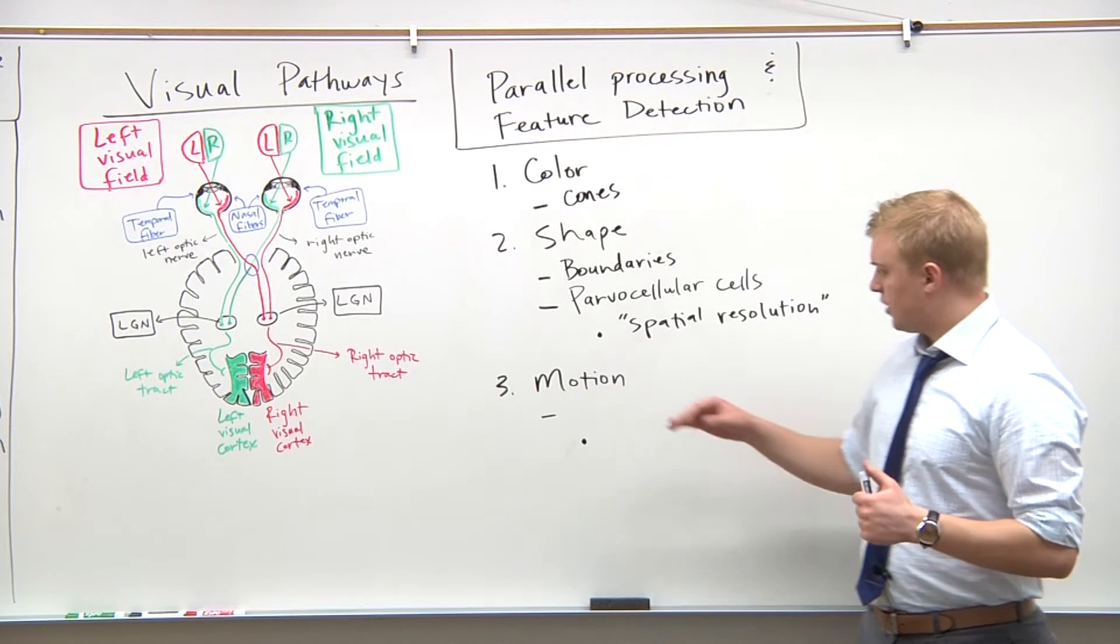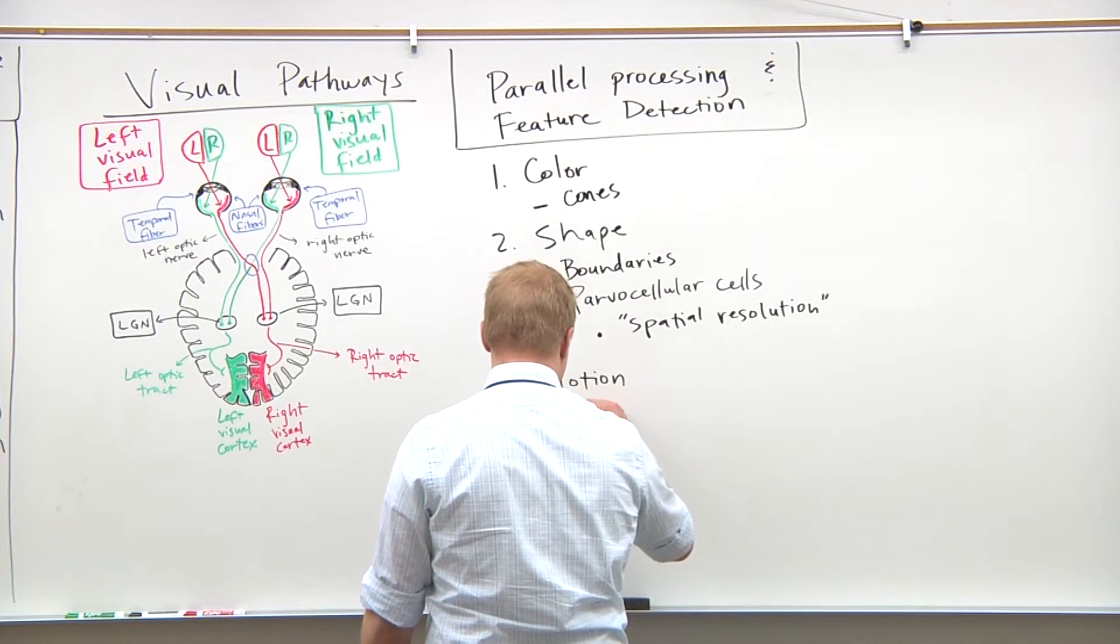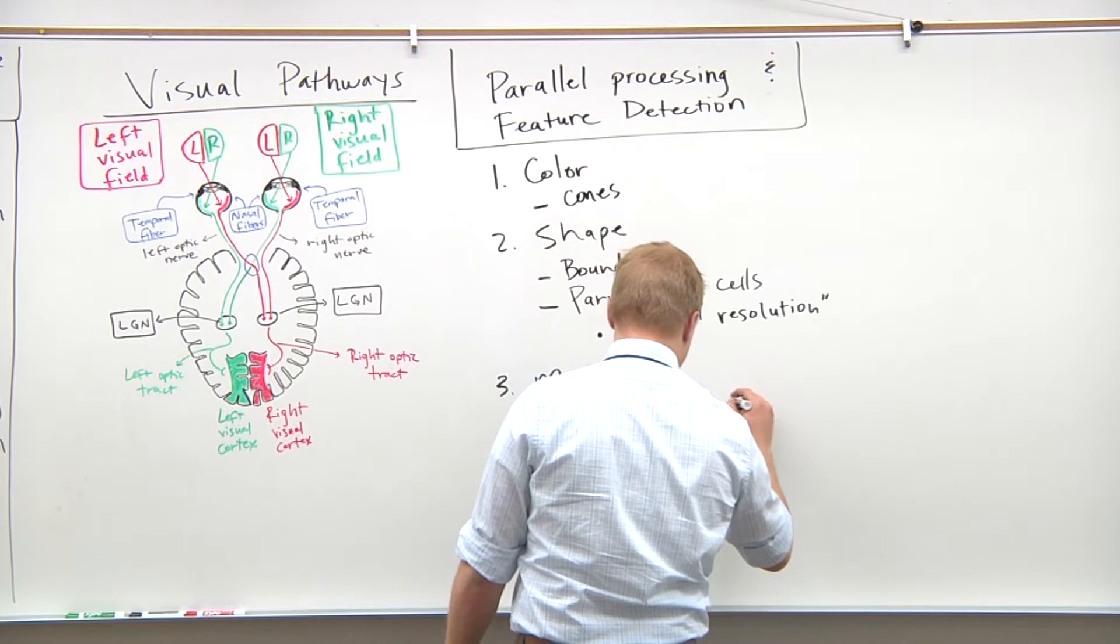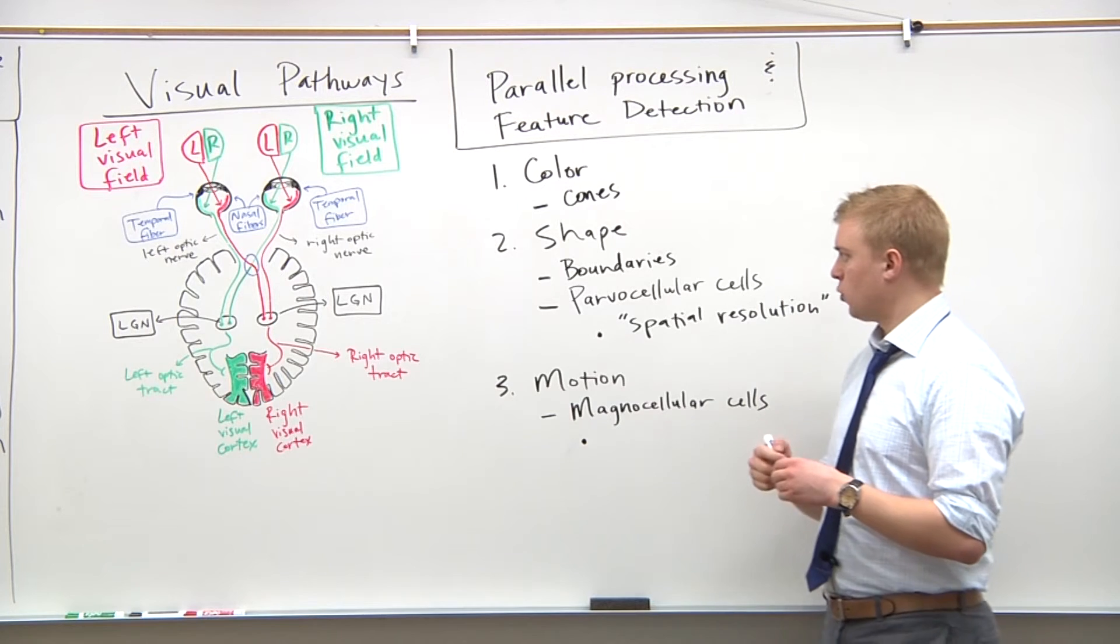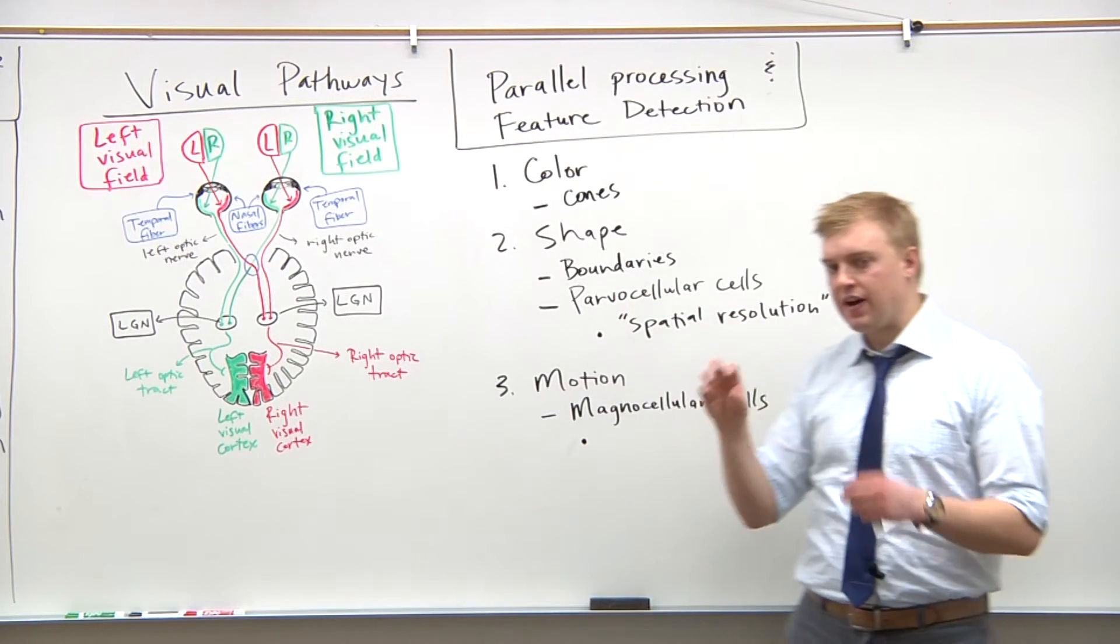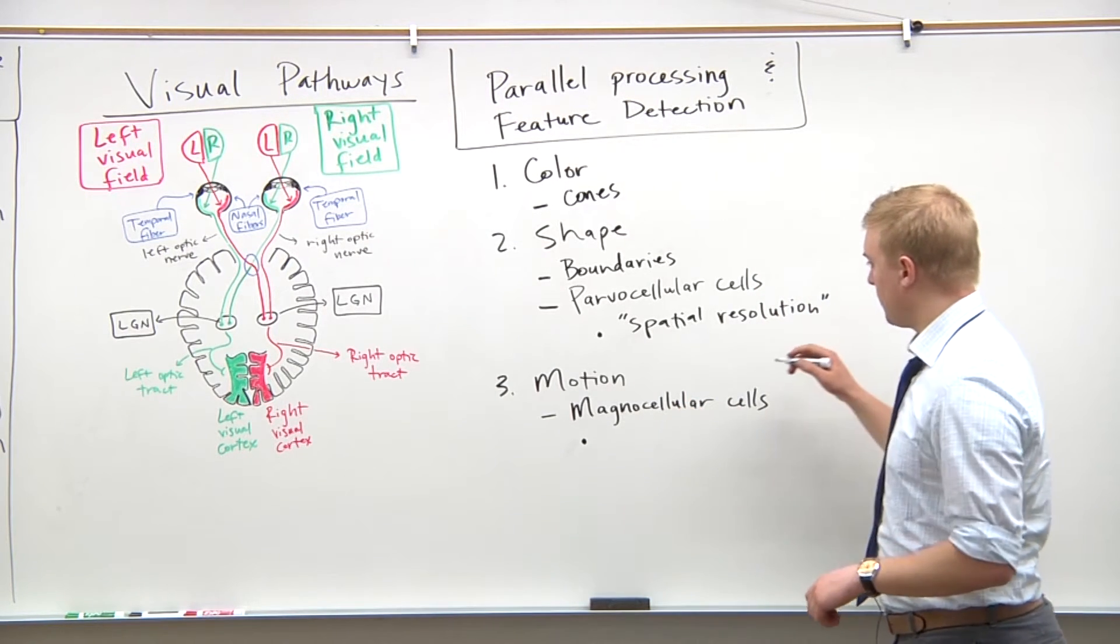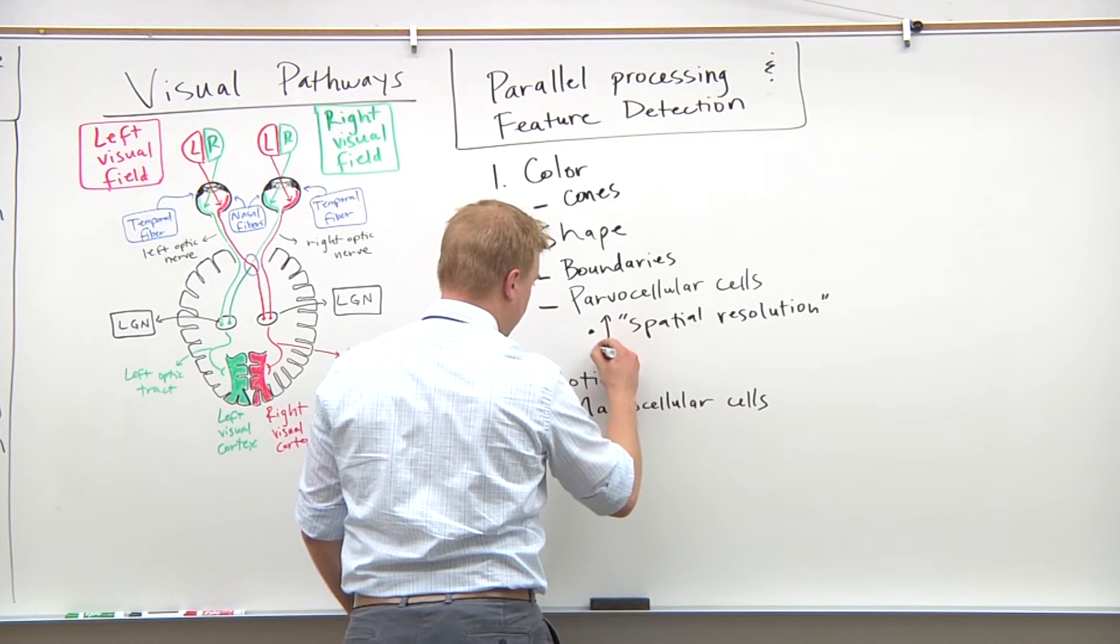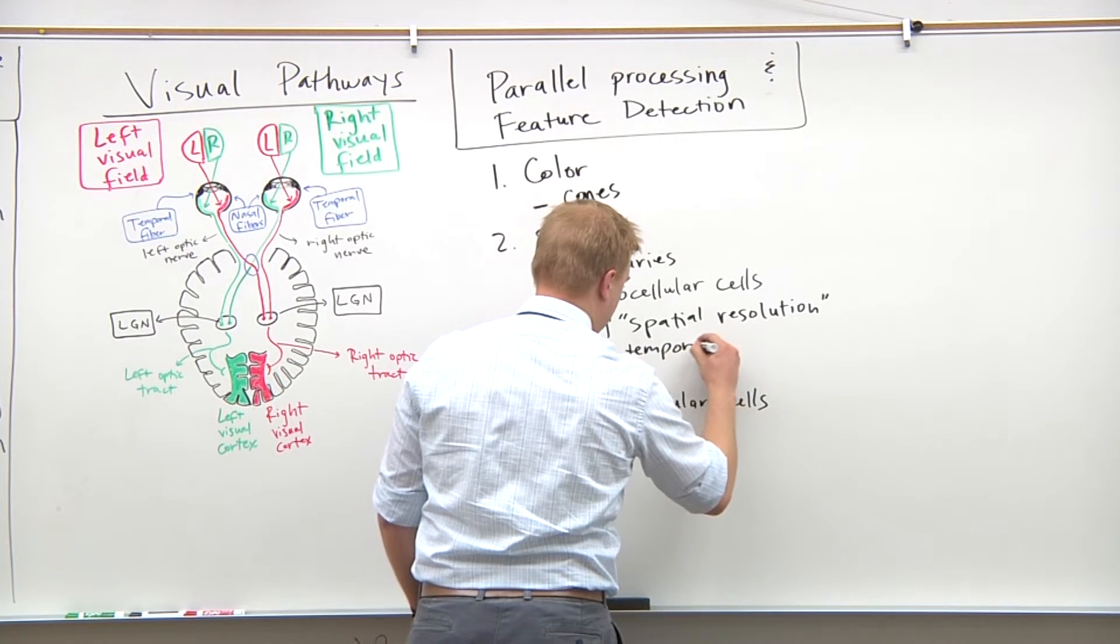And then lastly here, motion. And motion is going to be made possible by the magnocellular cells. So if something's moving, we're not using our parvocellular cells because these only allow us to see the fine details of an object. But they have, so let me write it like this, they have very high spatial resolution but very low temporal resolution.